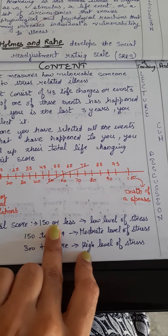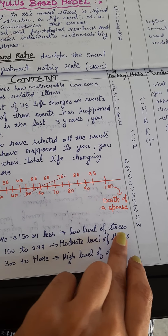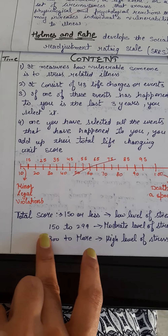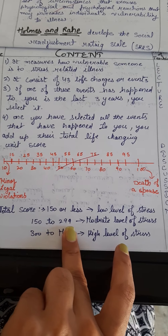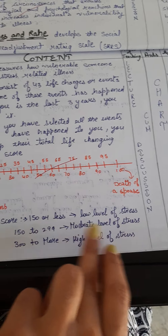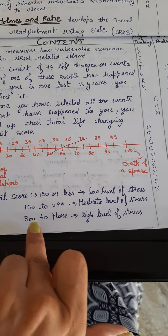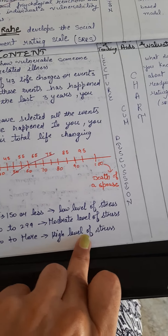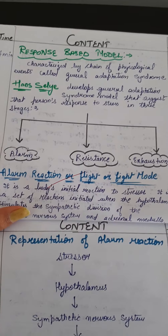If the total score is 150 or less, it is considered a low level of stress. If the score is 150 to 299, it is considered a moderate level of stress. If the score is 300 or more, it is considered a high level of stress.